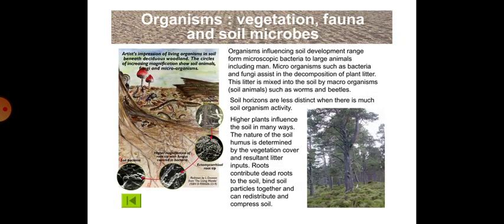Now we will discuss about organisms: vegetation, fauna and soil microbes. Organisms influencing soil development range from microscopic bacteria to large animals including man. Microorganisms such as bacteria and fungi assist in the decomposition of plant litter. This litter is mixed into the soil by macro-organisms or soil animals such as worms and beetles. Soil horizons are less distinct when there is much soil organism activity. Higher plants influence the soil in many ways; the nature of the soil humus is determined by the vegetation cover and resultant litter inputs. Roots contribute dead roots to the soil, bind soil particles together, and can redistribute and compress soil, as shown in the figure.